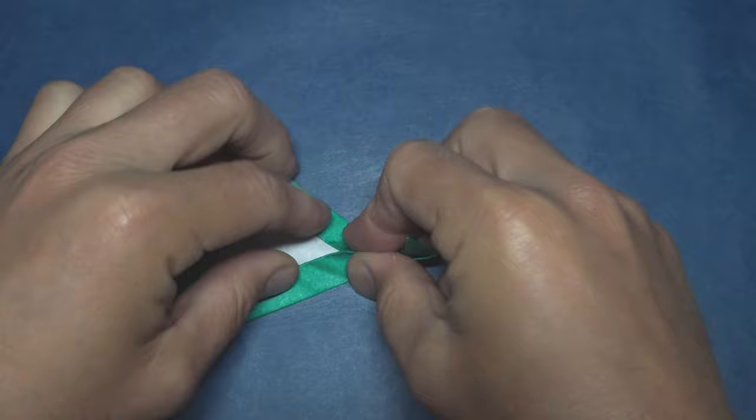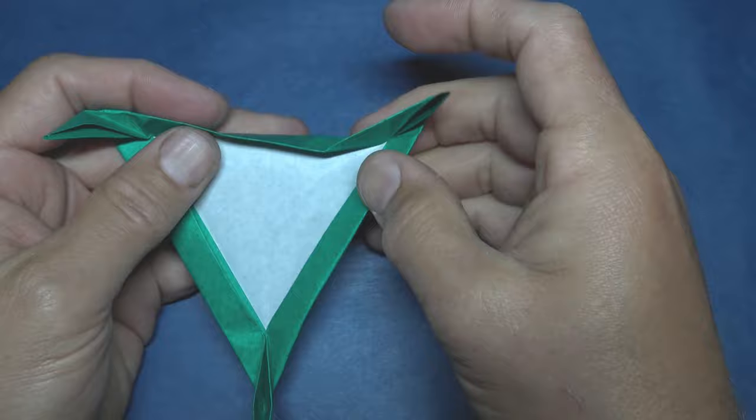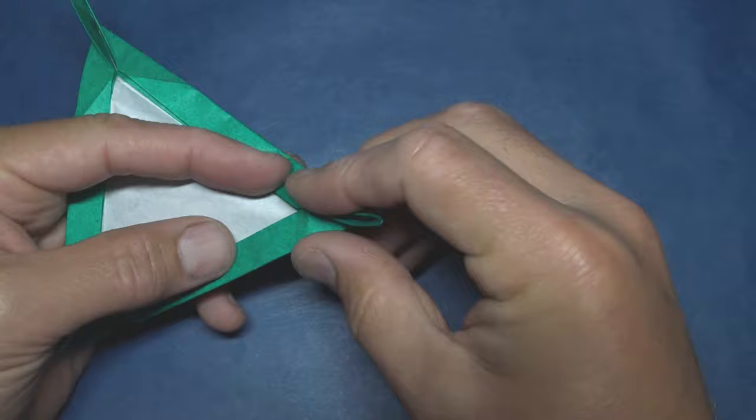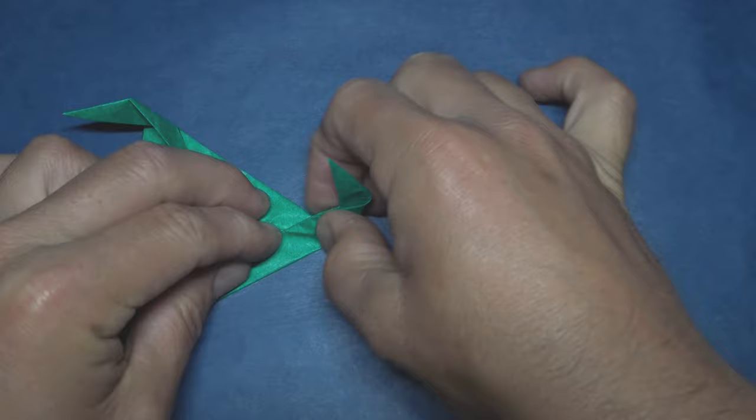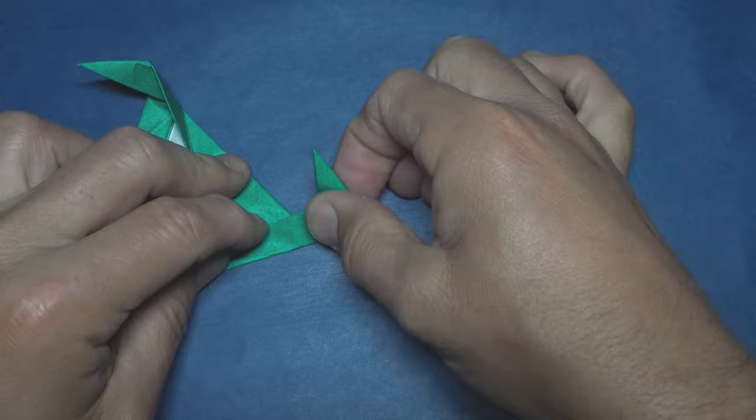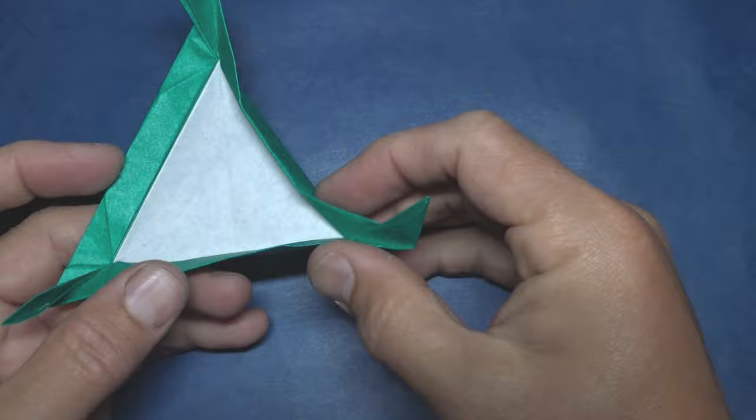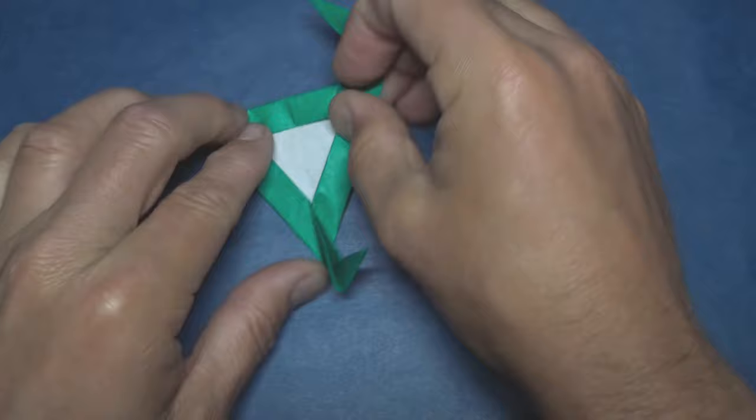Now pinch the rabbit ear and make it go both directions. Okay, unfold. And pinch this rabbit ear. Make it go both directions. And unfold. And now this one. Okay, and unfold. And now make them all at the same time.